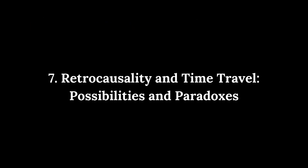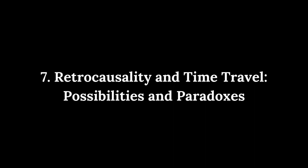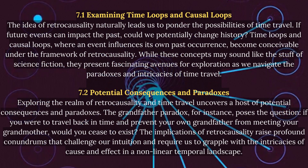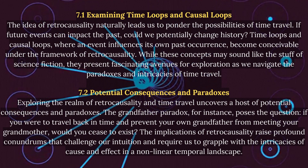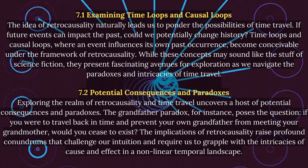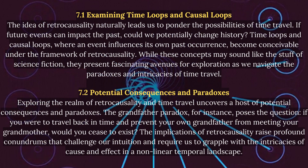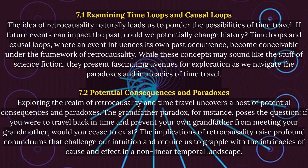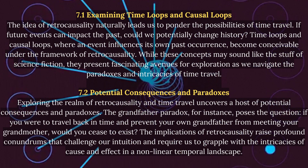The idea of retrocausality naturally leads us to ponder the possibilities of time travel. If future events can impact the past, could we potentially change history? Time loops and causal loops — where an event influences its own past occurrence — become conceivable under the framework of retrocausality. While these concepts may sound like the stuff of science fiction, they present fascinating avenues for exploration as we navigate the paradoxes and intricacies of time travel.